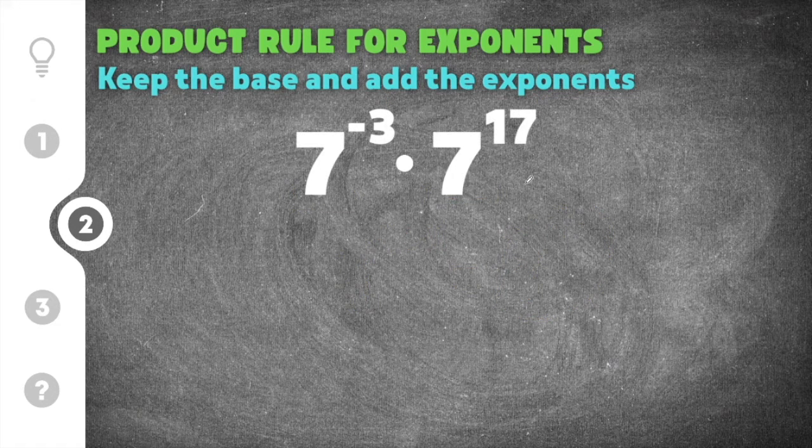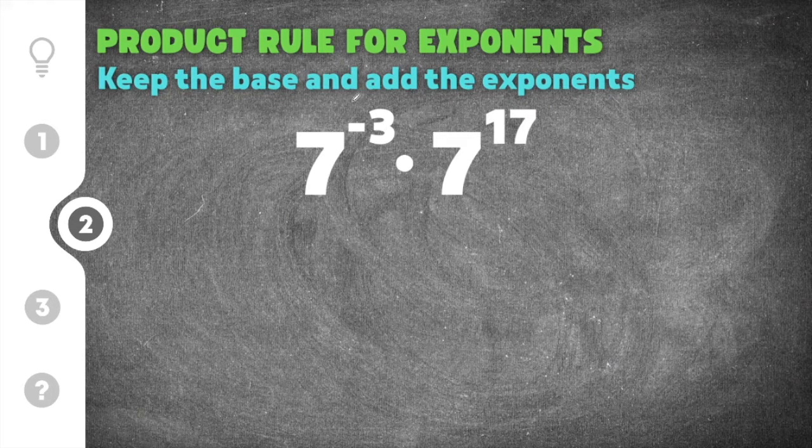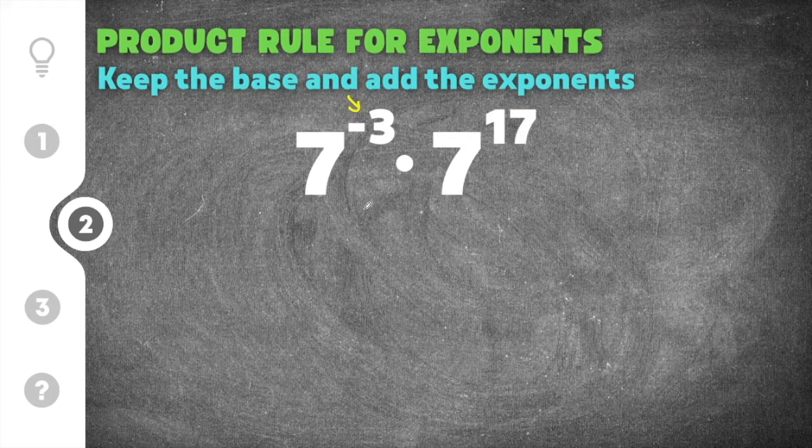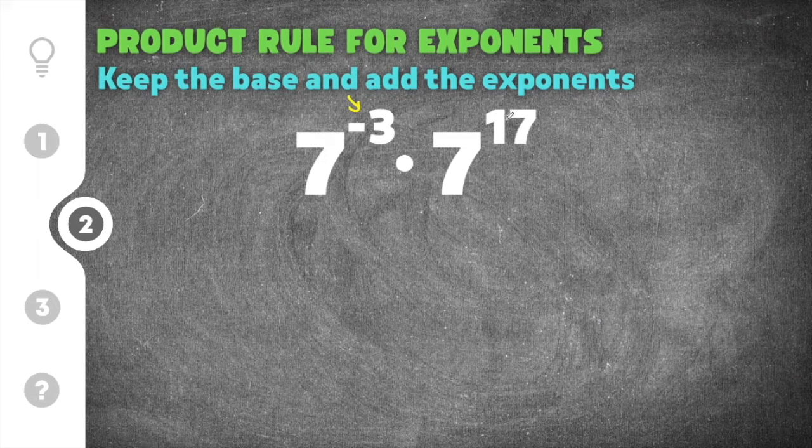Moving on to our second practice problem, this one gives us 7 to the negative third times 7 to the seventeenth power. This time we're given a negative exponent, but the rule stays the same. We're going to keep the bases and then we're going to add the exponents.